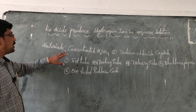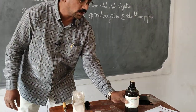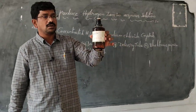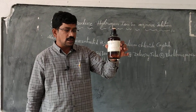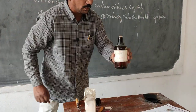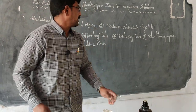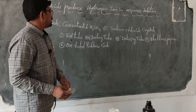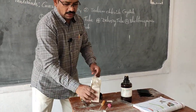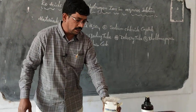The first material needed is concentrated sulfuric acid. This is very dangerous — we must be very careful with concentrated acids. The next material is sodium chloride, which is common salt.